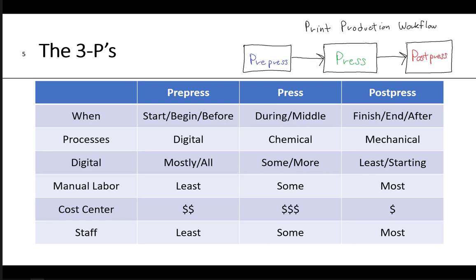From a process point of view, pre-press is mostly digital, and it's been that way for many years. Press is still chemical, because it's offset lithography — it works on ink-water balance and the chemistry of the fountain solution. And post-press is still mostly mechanical: cutting and folding. In terms of digital, pre-press is almost entirely digital. There is some more digital in press now in terms of electronics — remote control consoles for closed-loop inking and things like that. Post-press has the least amount of digital implementation.